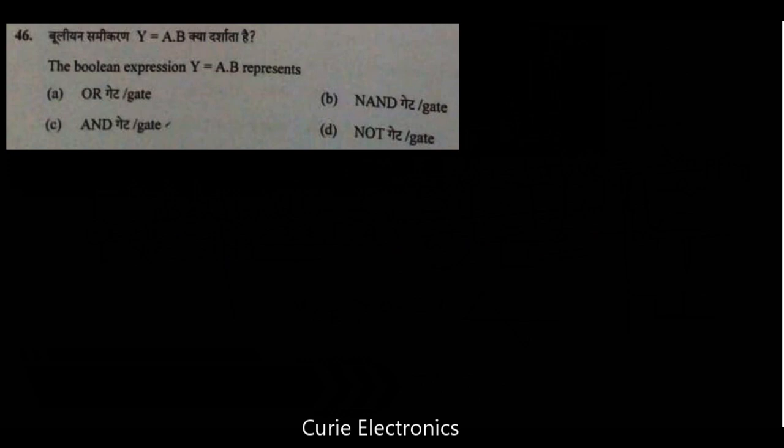The Boolean expression Y equal to A and B represent. What it represents? It represents AND gate. A and B are the input. Output is A dot B. That is A and B. So, it represents AND gate.